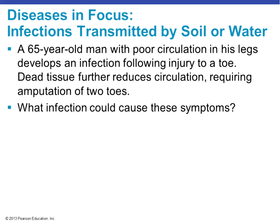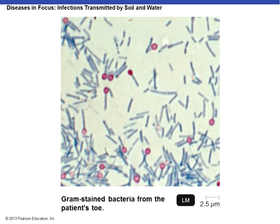A 65-year-old male with poor circulation develops an infection following injury to a toe. The dead tissue further reduces circulation, requiring amputation. Looking at the Gram stain, we see rod-shaped purple cells, meaning gram-positive rods, so the culprit would be Clostridium perfringens causing gas gangrene.